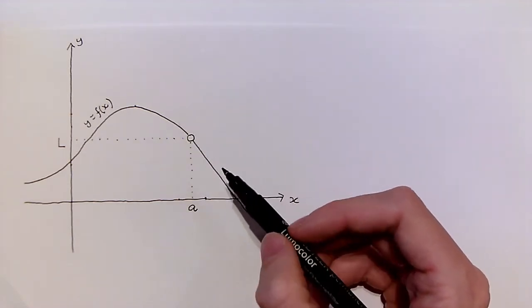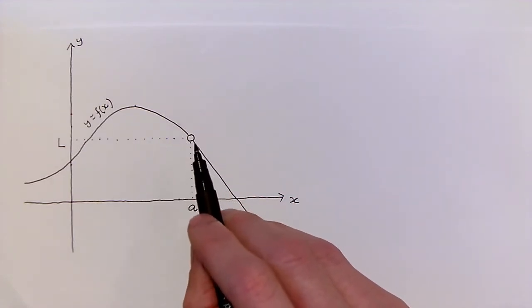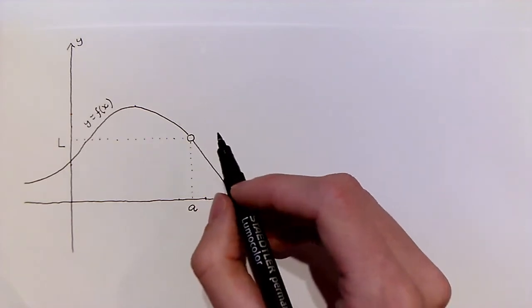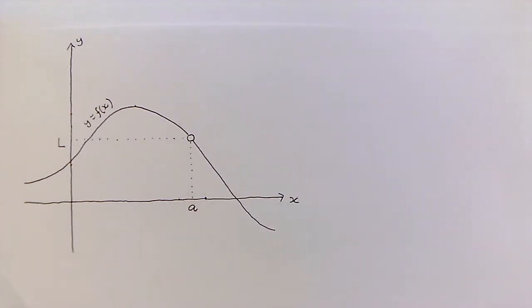An important point about limits is that if I want to know what the limit of f is as x approaches a, that doesn't actually depend on what f does at a itself, only on the behaviour of f for x close to a.